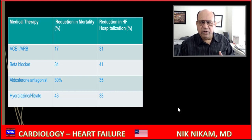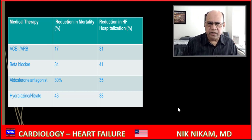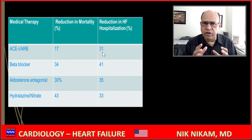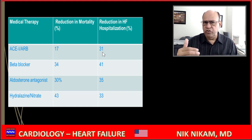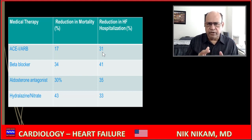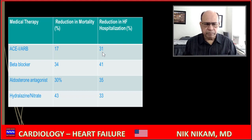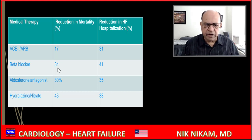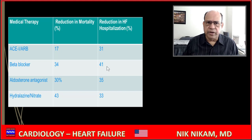How good are these drugs at reducing mortality and improving quality of life? ACE inhibitors or ARBs reduce mortality by 17 percent and re-hospitalization by 31 percent — so all patients with Class 2 or greater heart failure need to be on ACE inhibitors or ARBs. Beta blockers — specifically metoprolol and carvedilol — reduce mortality by 34 percent in patients with heart failure and reduce hospitalization by 41 percent.